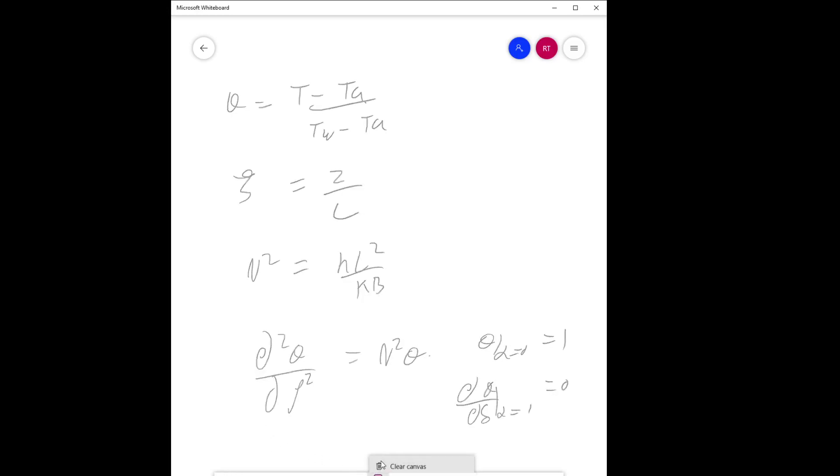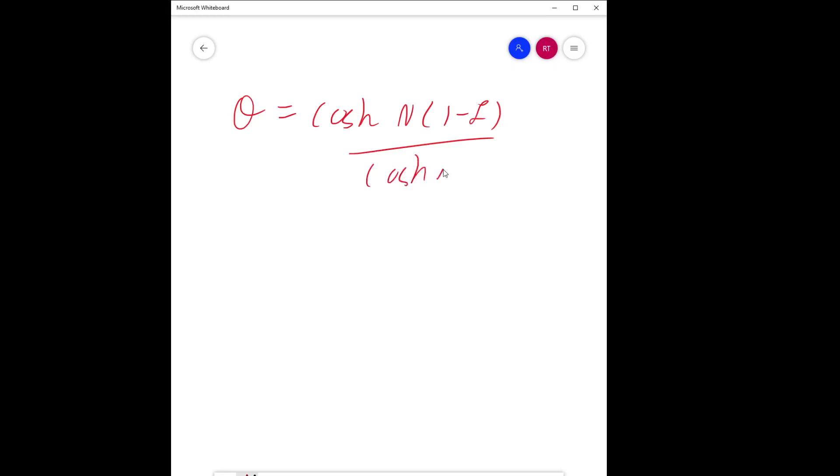You will get theta equals cosh[n(1 - epsilon)] divided by cosh(n).